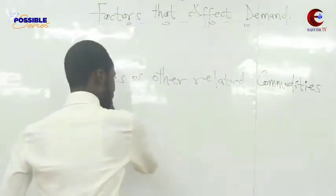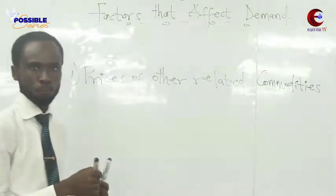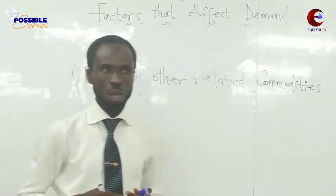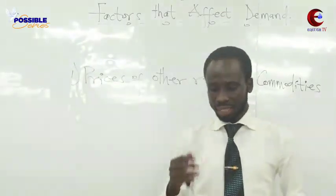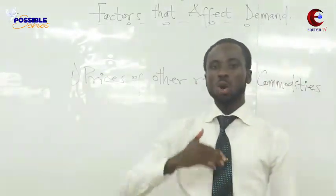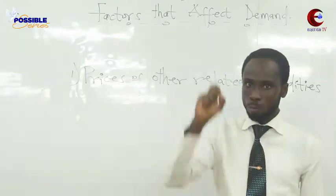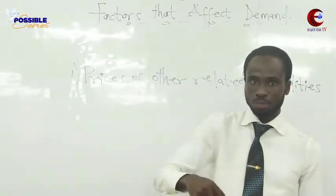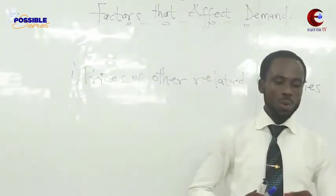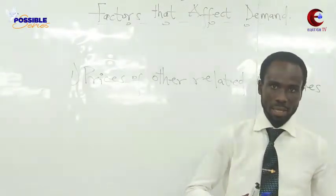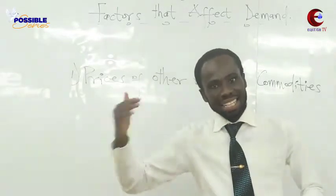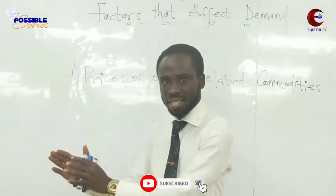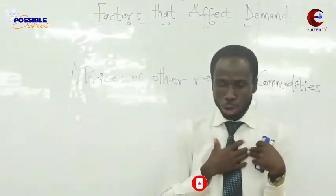Prices of other related commodities — don't be confused. In our previous lectures we were just looking at the own price, the price of the commodity in question. But this time we are going to look at other commodities' prices — the effect that other commodities' prices have on our commodity.